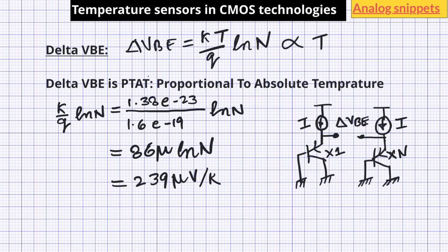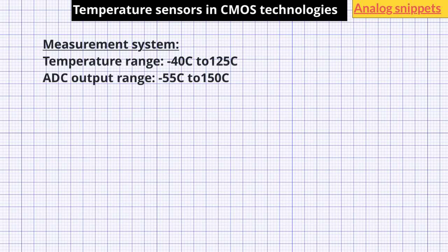With high accuracy ADCs and one-point temperature trimming, this type of sense can give temperature accuracy better than 2°C. Some have reported accuracy better than 1°C. For the measurement system with diode voltage as sense, we need an ADC to convert this voltage into bits. Let's estimate the number of bits needed for a measurement range of minus 40°C to 125°C. Since an untrimmed sensor can have ±10°C inaccuracy, the total ADC output range should extend to minus 55°C to 150°C. For a precision of 1°C per bit, we need 206 unique digital values to represent this range.